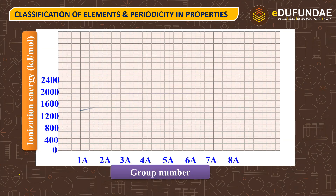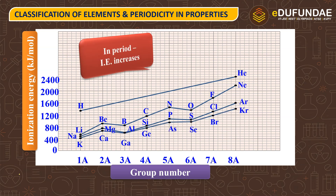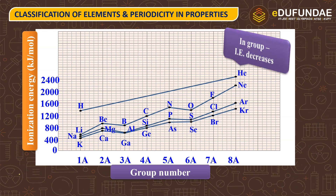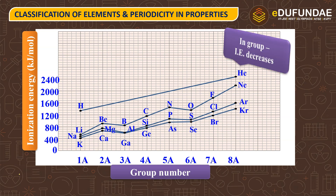If you look at the trend, these are the trends in your period. If you move in your period, the value of ionization will increase. And if you talk about the trend in your group, the value of ionization will decrease.